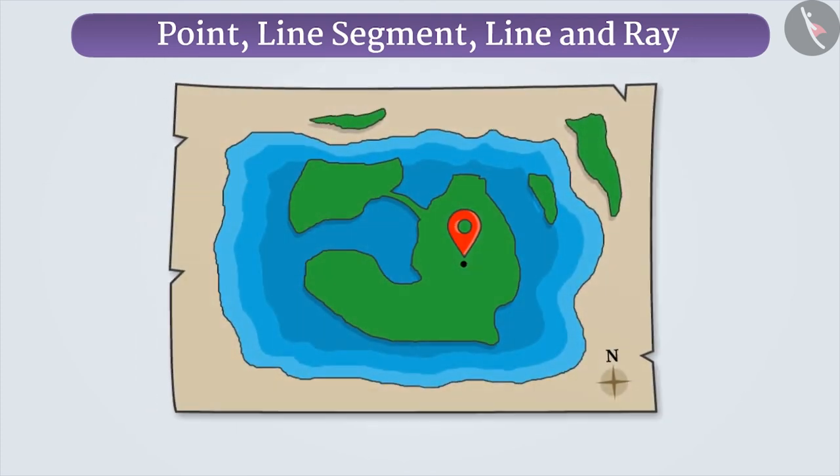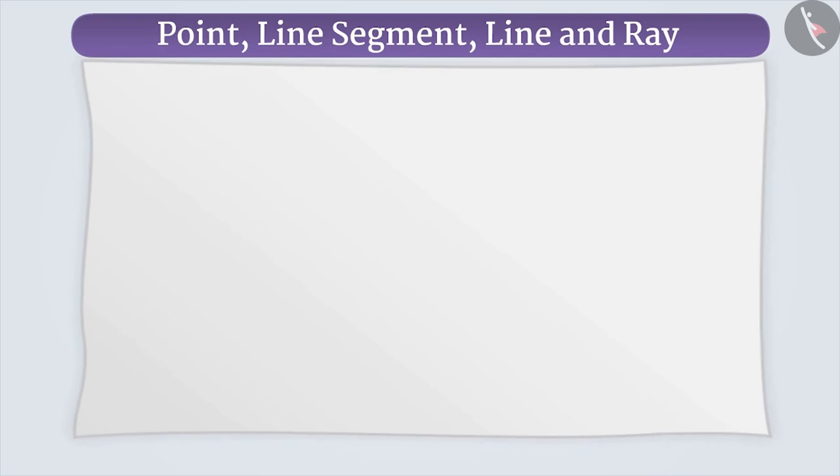A very small mark indicating a position or location is called a point. To show a point on paper, we make a small mark or dot with a pen or pencil and name it with a capital letter in English.